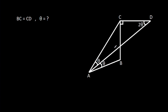In this video, we have been given that BC is equal to CD and angle BCD is 90 degrees. Angle CDA is 2 theta, angle CAD is theta, and angle BAD is theta. We have to find theta.